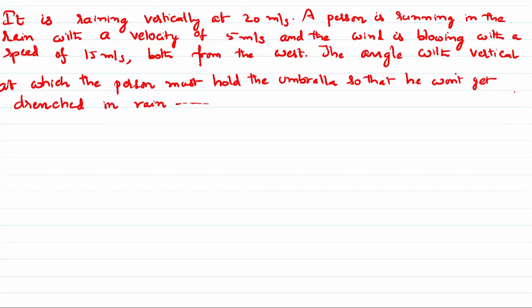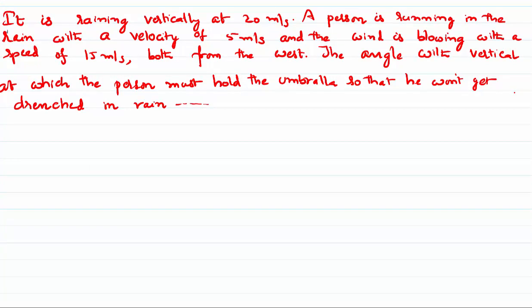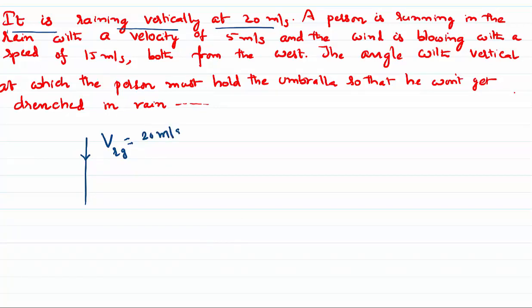It is given in the problem that it is raining vertically down at the rate of 20 meters per second. If I have to represent that, this is the velocity of the rain falling vertically down. The upper part of any page is a positive y-axis and the lower part is negative y-axis, so it has to be represented as minus 20 j-cap because it's moving towards the negative y-axis.